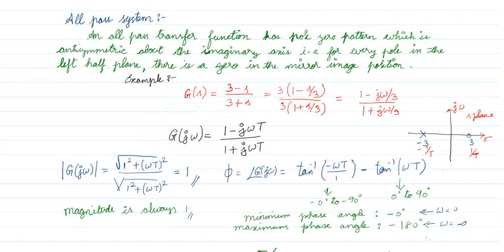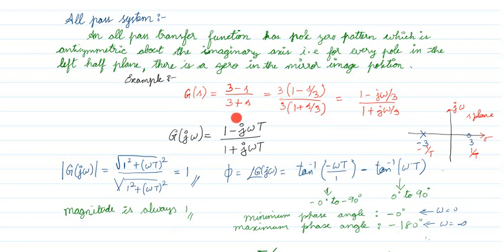What is an all-pass system? An all-pass system transfer function has a pole-zero pattern which is anti-symmetric about the imaginary axis. That is, for every pole in the left half plane, there is a zero in the mirror image position. I am taking a transfer function as an example.